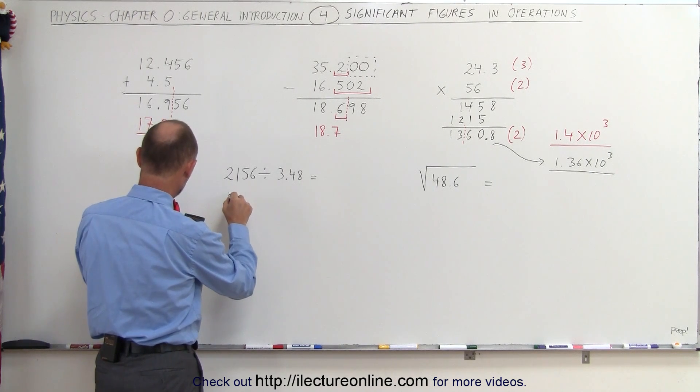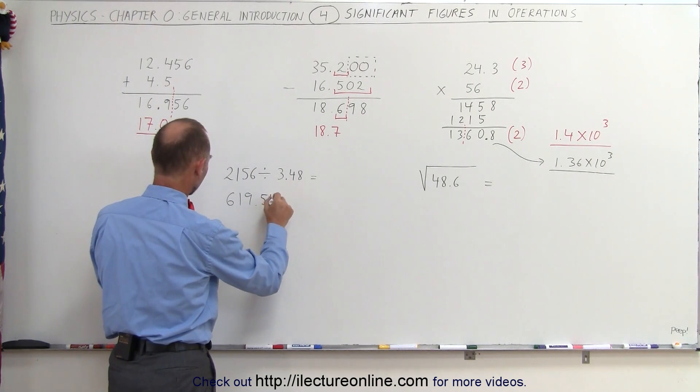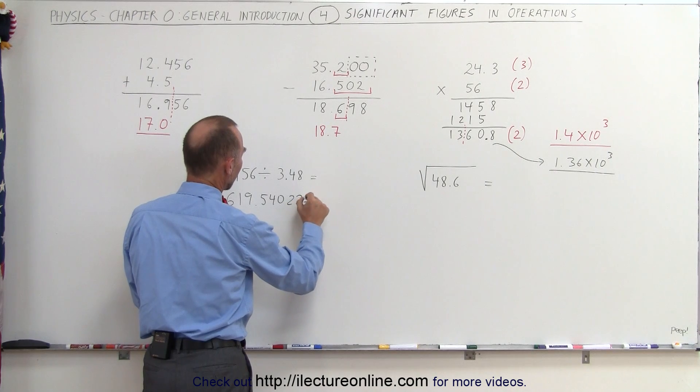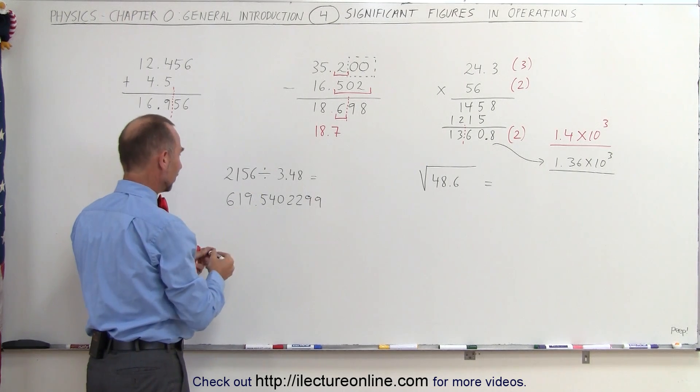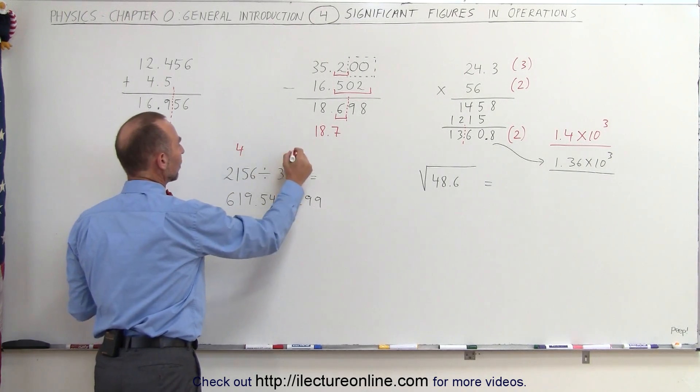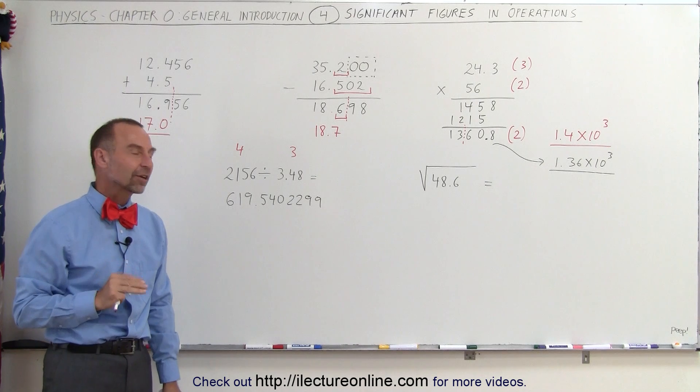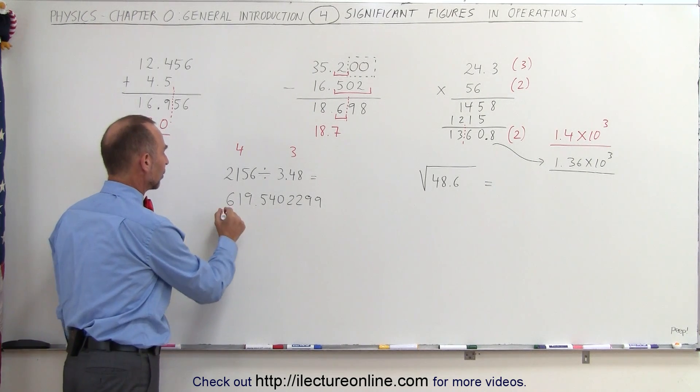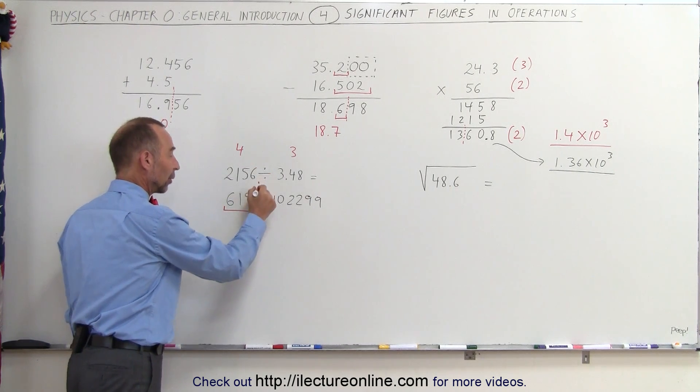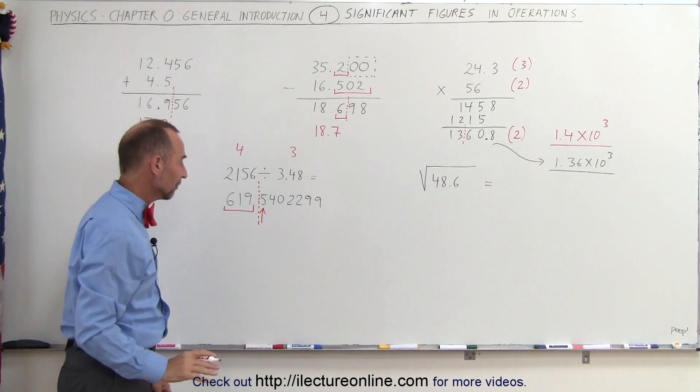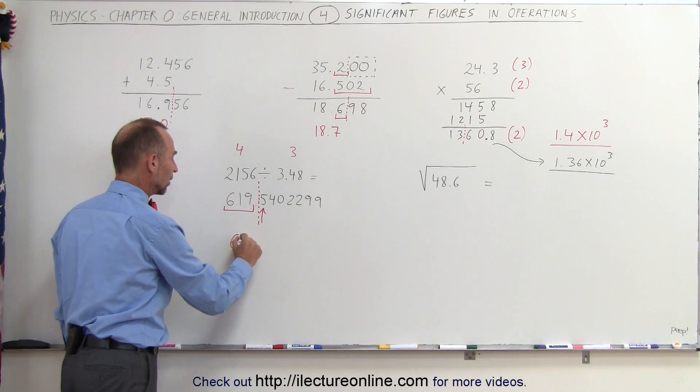My calculator will give me the result of 619.5402299. Now notice that the two numbers involved, the first number had four significant figures. So this one had four, this one had three. When we're dividing, the rule is just the same as multiplying. I should only have three significant figures in the answer. So in this case, I can only use the first three numbers. I take a look at the fourth one to see if I should round down or round up, because I'm going to cut off all these numbers right here. They're no longer significant. But since this is 54, which is bigger than 50, I should round up and the answer should be written as 620.